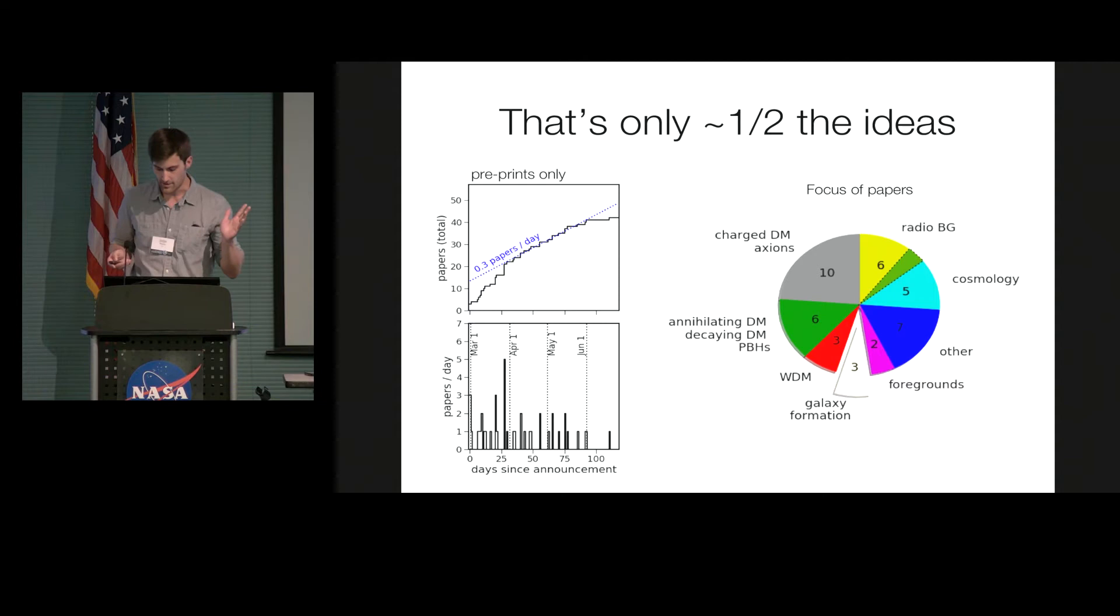And these aren't even all of the ideas. I've been tracking this roughly on the archive. There have been 40-some papers to come out in the last three months, which is quite a bit of activity for our little field. But those three ideas really only constitute about half of the ideas that are out there to explain some or all of the signal.